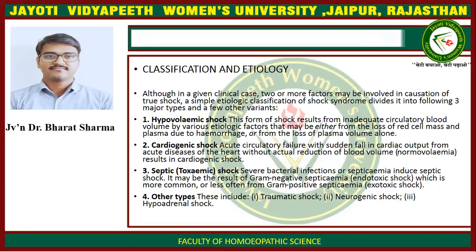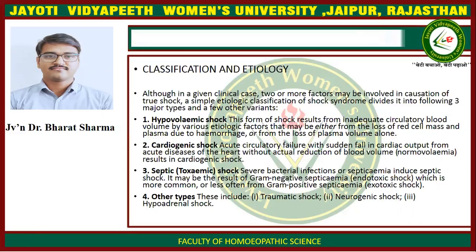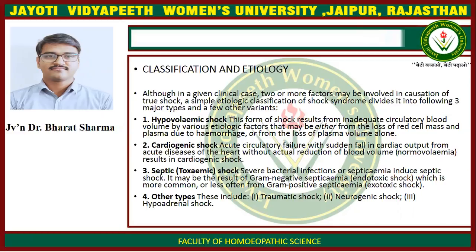Classification and etiology. Although in a given clinical case two or more factors may be involved in causation of true shock, a simple etiological classification of shock syndrome divides it into three major types and a few other variants. First is hypovolemic shock. This form of shock results from inadequate circulatory blood volume, either from loss of red cell mass and plasma due to hemorrhage, or from loss of plasma volume alone.